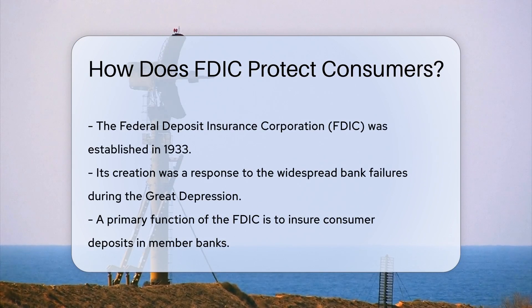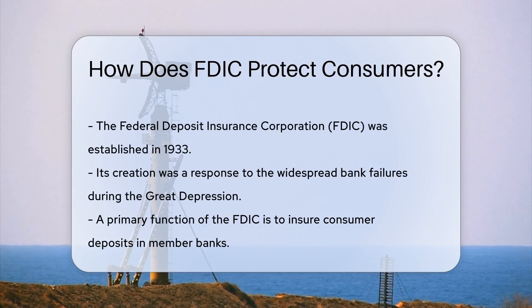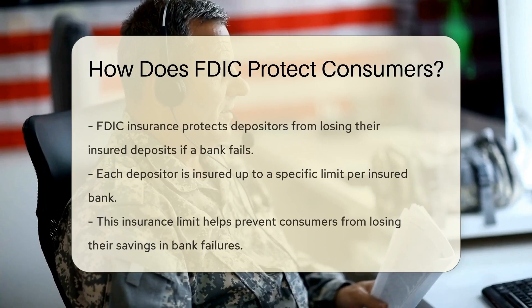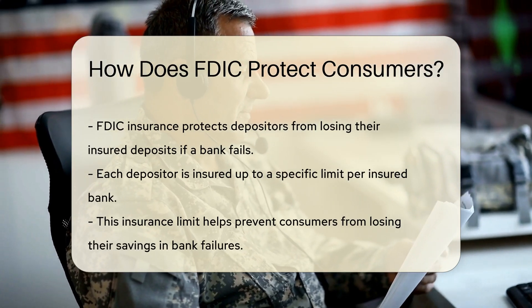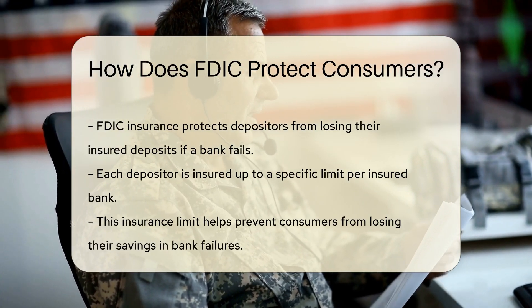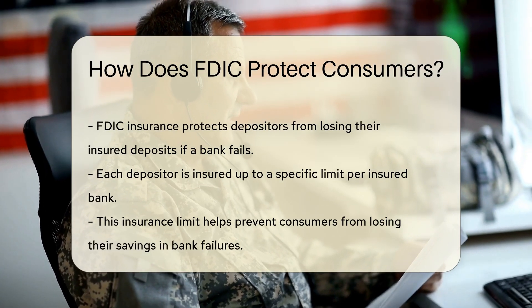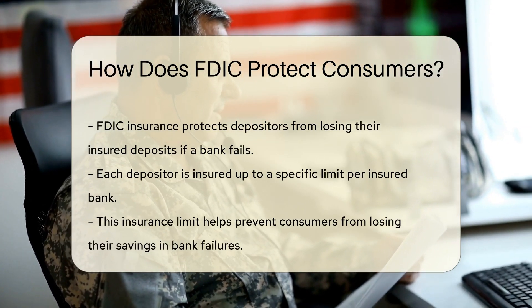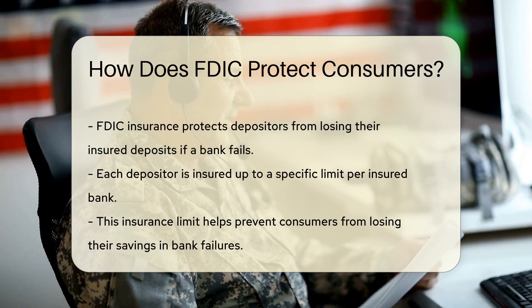Established in 1933, it was created in response to thousands of bank failures during the Great Depression. One of the primary functions of the FDIC is to insure deposits made by consumers in member banks. This insurance protects depositors against the loss of their insured deposits if a bank fails. Each depositor is insured up to a specific limit per insured bank, helping to ensure that consumers do not lose their hard-earned money in the event of a bank failure.